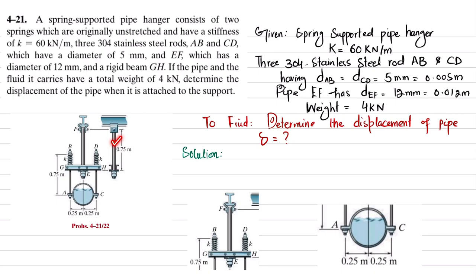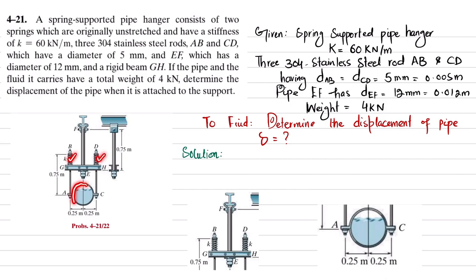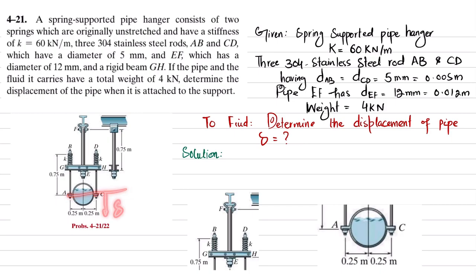You can see this is the spring-supported pipe hanger — this is the side view and this is the front view. It consists of stainless steel rods AB and CD having a diameter of 5 millimeter, while EF has a diameter of 12 millimeter. There are two springs attached, and this is the pipe which carries the fluid, having a weight of 4 kilo-newton acting downward. We have to find the displacement of this pipe due to this load.